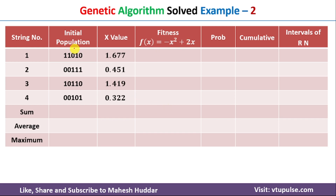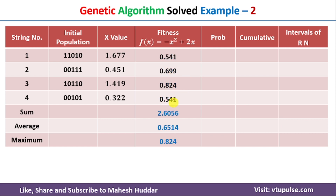Next, we apply the fitness function f(x) = -x² + 2x to get the fitness score for each chromosome. For x = 1.677 we get 0.541; for x = 0.451 we get 0.699. Similarly, fitness scores are computed for the third and fourth chromosomes. We then calculate the sum, average, and maximum fitness scores. The maximum fitness value for the initial population is 0.824.